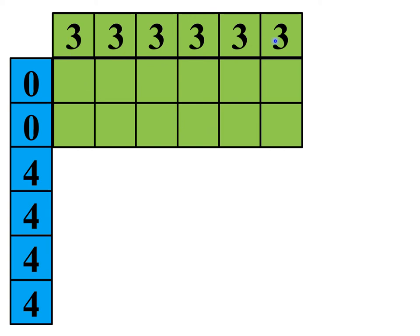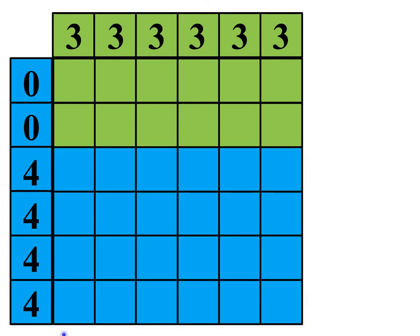But when green rolls a three and blue rolls a four, blue will win. It looks like blue is better than green. Blue squares here look like there's 6 times 4, looks like 24 out of 36 which reduces to two-thirds. So blue beats green two-thirds of the time. We can even say blue is greater than green.